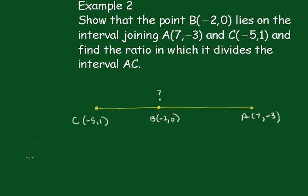Let's do that now. So the gradient of BC is equal to the difference in the y values. So it'll be 0 take away 1, over -2 take away -5, which is -1 over 3.